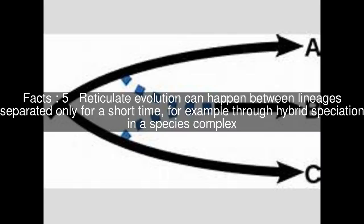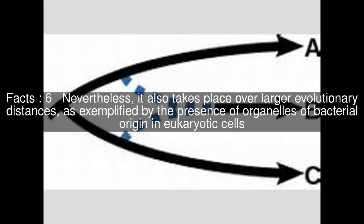Reticulate evolution can happen between lineages separated only for a short time, for example through hybrid speciation in a species complex. Nevertheless, it also takes place over larger evolutionary distances, as exemplified by the presence of organelles of bacterial origin in eukaryotic cells.